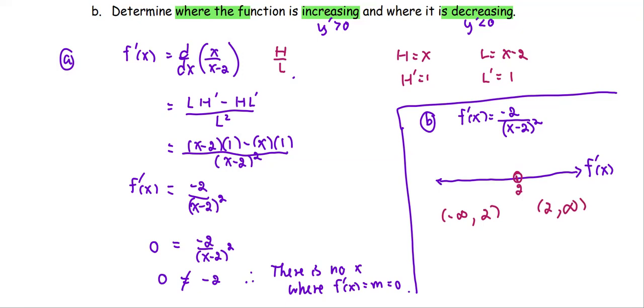From the derivative that we obtained, -2/(x-2)², the quantity squared always returns positive value. Always positive. Where the -2 is always negative. Therefore, the final sign is going to be negative wherever you pick the x value in the domain.